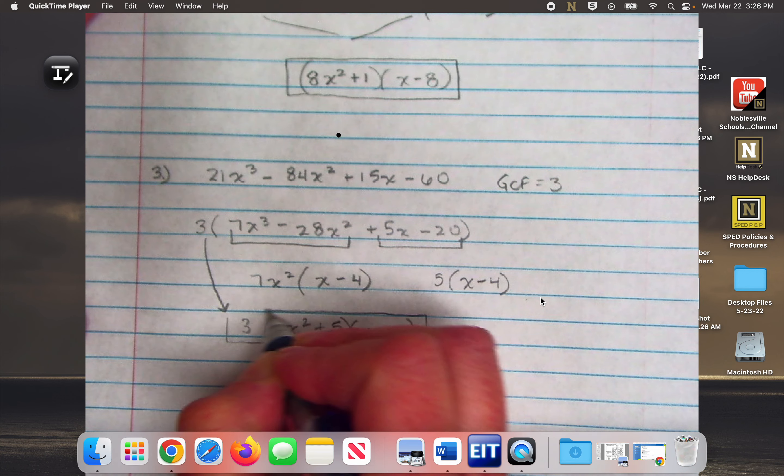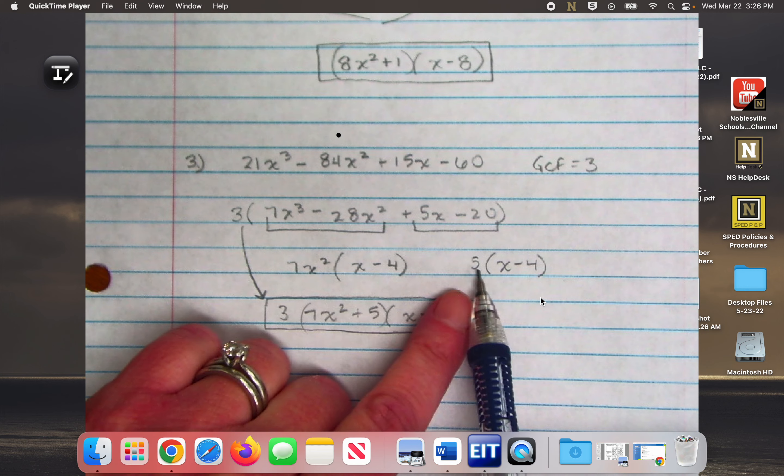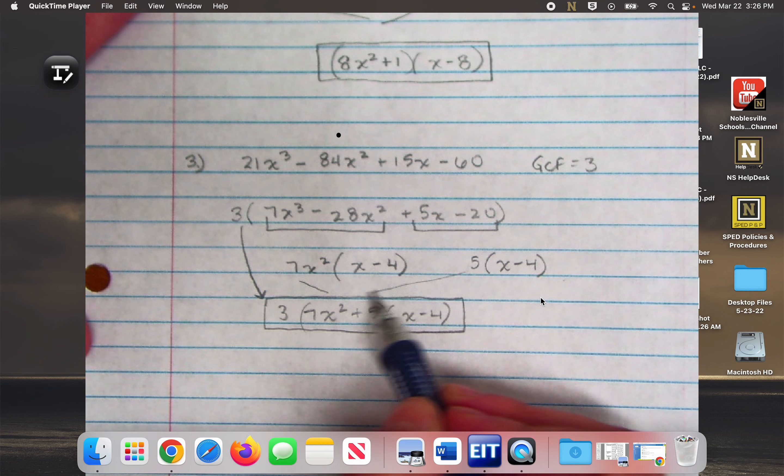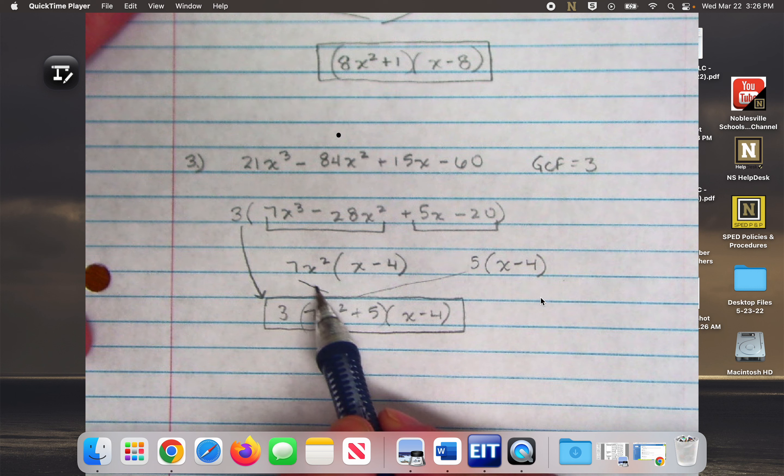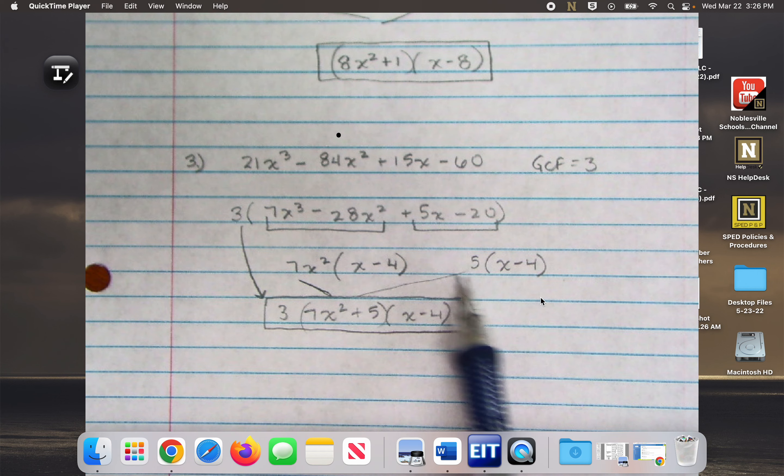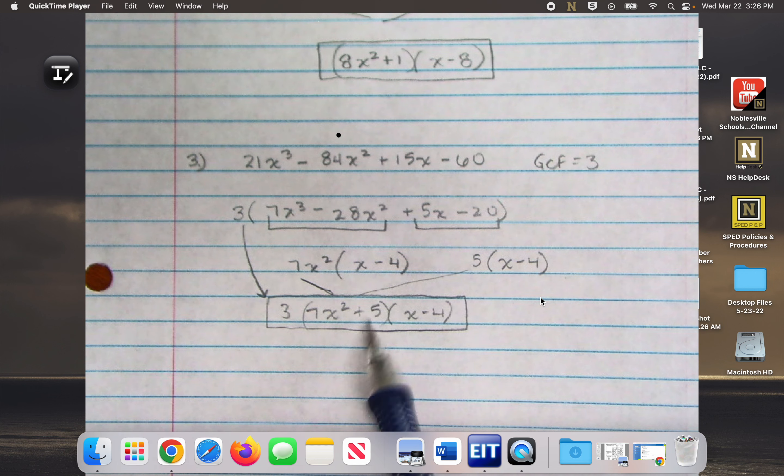Wait, how did we get a plus 5? Because I took the 5 out of here. This creates this quantity here. Now sometimes, and I think there's an example like it maybe on the study guide, you have to take a negative value out so that the two quantities match. And when you do that then you would just have minus right here instead of plus.